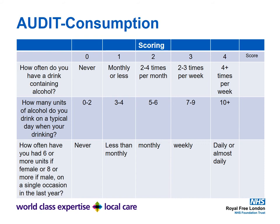You may have heard of the CAGE questionnaire, but we now tend to use the AUDIT-C score. There are two versions; this is the simplified version you can use in the emergency department. The 'C' in AUDIT-C stands for consumption and gives you a structured way of asking about how much someone drinks. The three questions are: how often do you drink alcohol, how many units do you drink, and how often do you have six or more units if female, or eight if male. You then calculate the score.